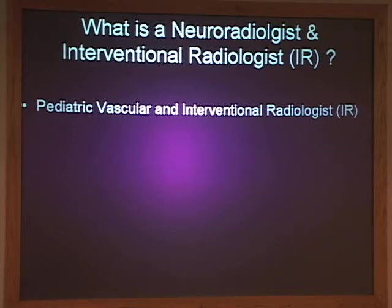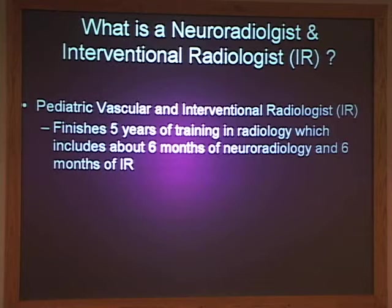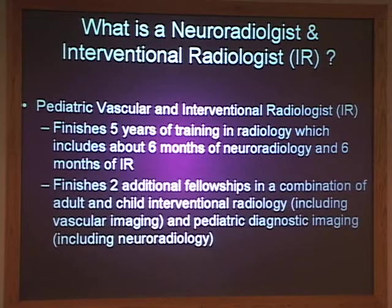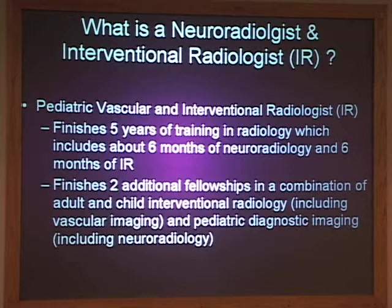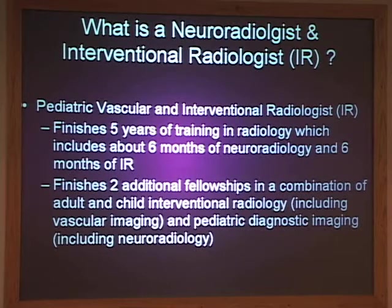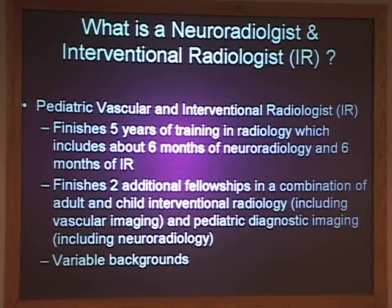The pediatric vascular and interventional radiologist — a lot of times you'll just hear 'IR' — has the same beginning: approximately five years with six months of IR and six months of neuroradiology. Then you finish two additional fellowships in adult and child interventional radiology. Some people do a year of adult and a year of child; some concentrate only on children. I don't treat any adult diseases, and that includes the diagnostic imaging and neuroradiology component.